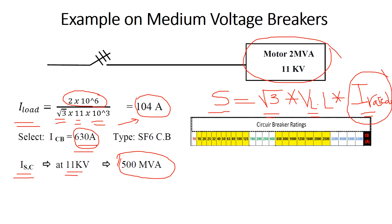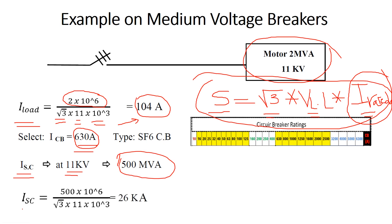Using the formula S_sc = √3 × V_LL × I_sc, we get: I_sc = 500 MVA / (√3 × 11 kV) = 26 kA. So we need a circuit breaker rated at 630 A that can withstand 11 kV and a short circuit current of 26 kA.